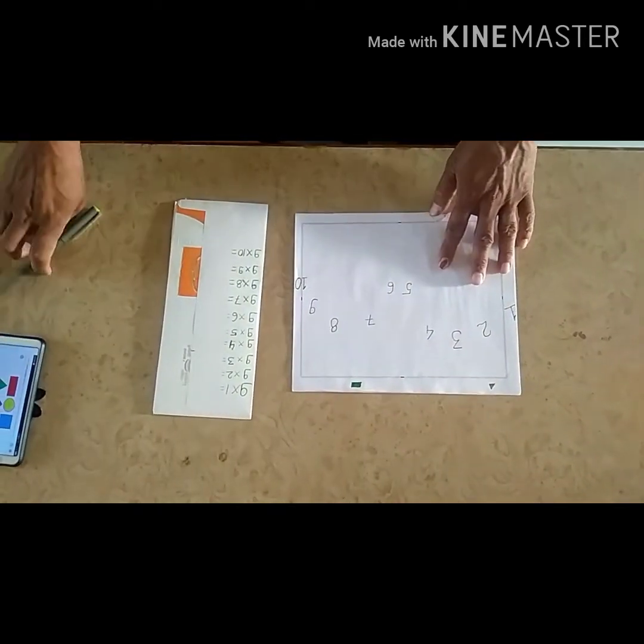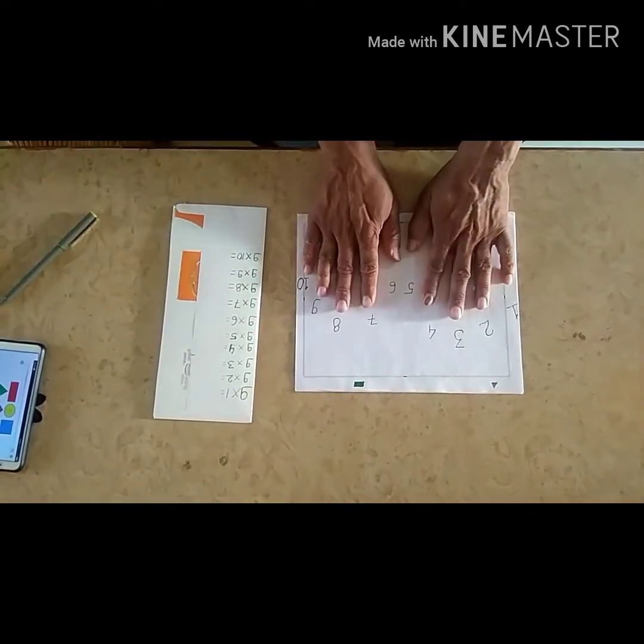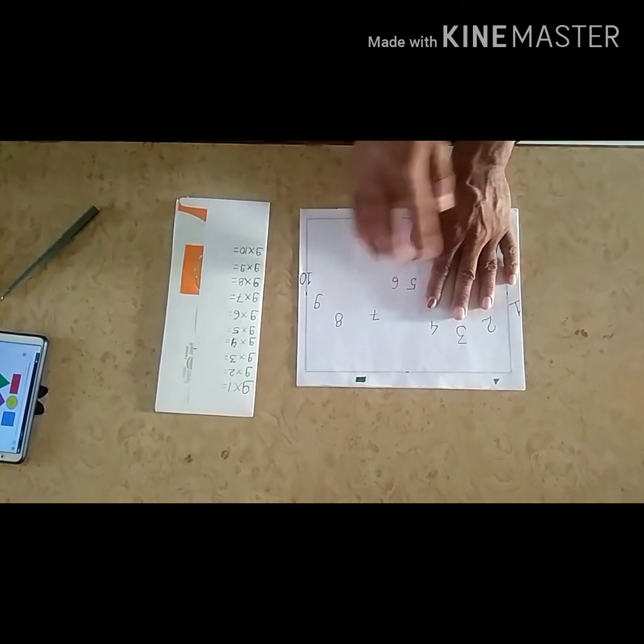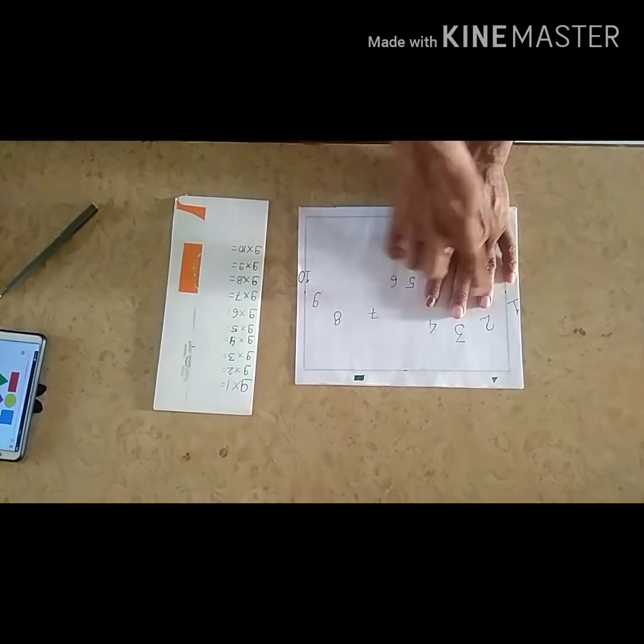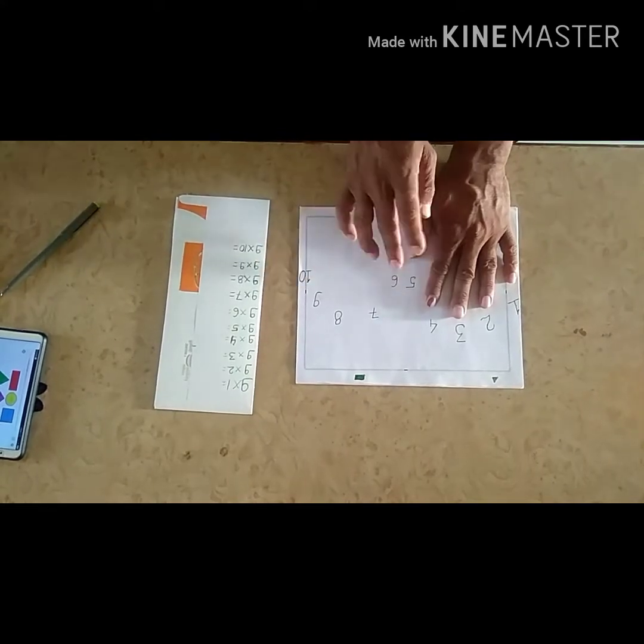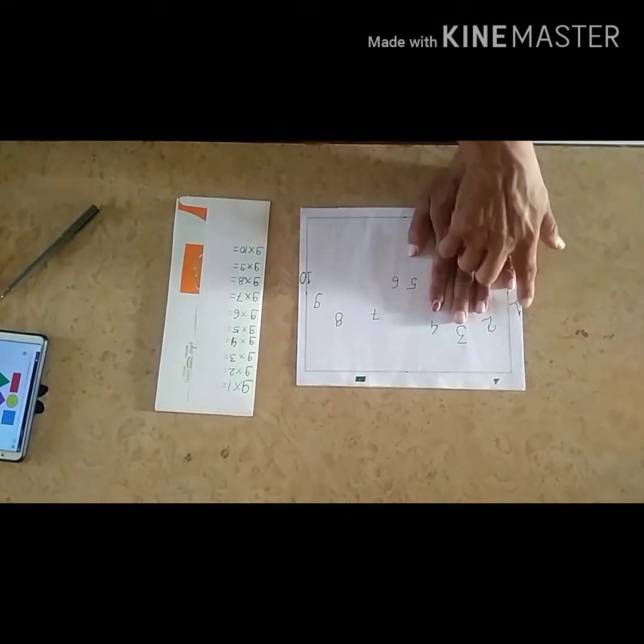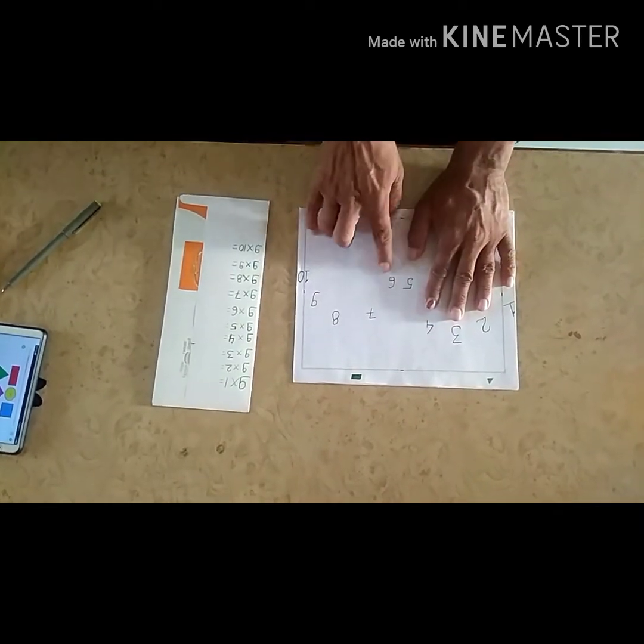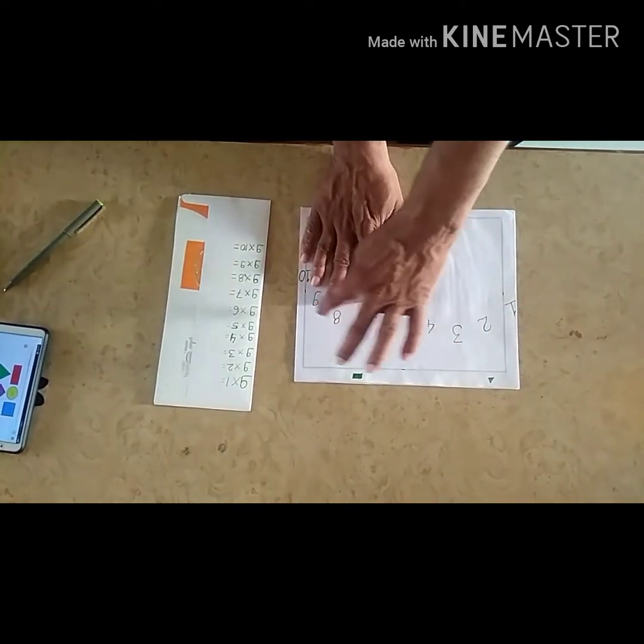For this, we will put both our hands on a paper and we will mark each finger by a number from 1 to 10. This is the first finger, 1, this is the second, 2, 3, 4, 5, 6, 7, 8, 9.